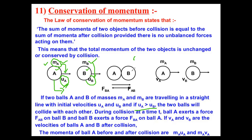If uA and uB are equal — suppose A is moving at 20 meters per second and B is also moving at 20 meters per second — if both are going at the same velocity, there is no question of collision. They will never collide.